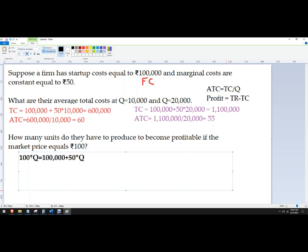So this is just an algebra problem. 100Q equals 100,000 plus 50Q.